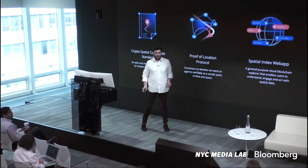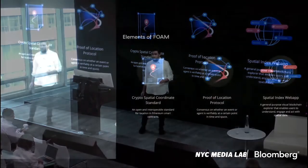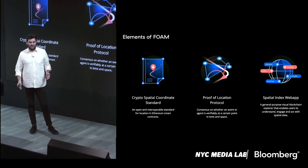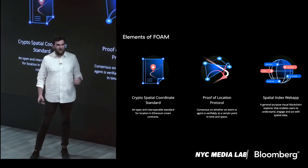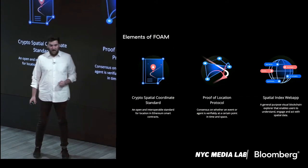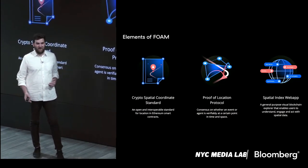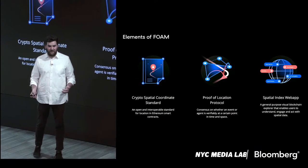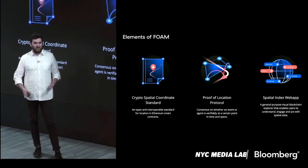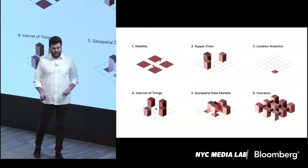The project is really in three different elements. One is location encoding — how do we actually encode location information in blockchain data? With that, we have something called the crypto spatial coordinate. We have visualizer tools, so if you encode blockchain information that way, how do you actually interact with it on a front end? This is something we call the spatial index. And ultimately, we want to know: are these things where they say they are? That's proof of location.